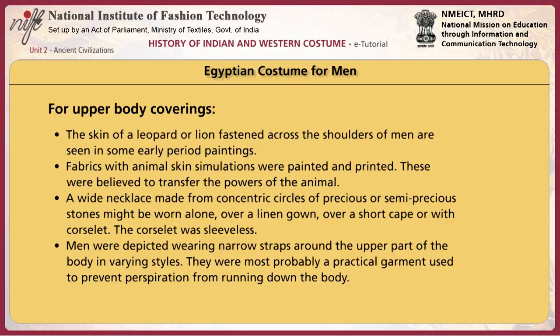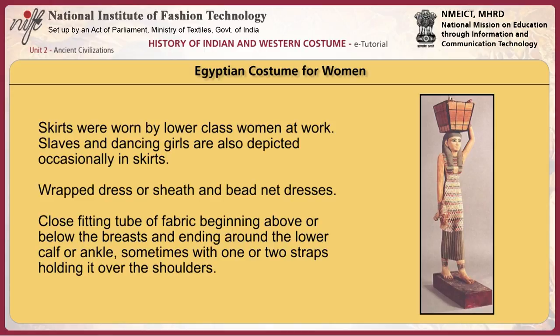A white necklace made from concentric circles of precious or semi-precious stones might be worn over a linen gown, over a short cape or with a corslet. The corslet was sleeveless. Men were depicted wearing narrow straps around the upper part of the body in varying styles, most probably a practical garment used to prevent perspiration from running down the body. Skirts were worn by lower class women at work, and slaves and dancing girls are also occasionally depicted in skirts. Wrapped dress or sheath and beadnet dresses were also worn.